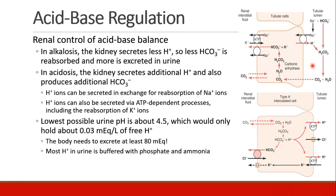The body can acidify the urine down to a pH of about 4.5. If you do the math, that's only about 0.03 milliequivalents per liter of free hydrogen ion — far less than the 80 milliequivalents we need to get rid of every day. So most of the hydrogen ion in your urine is buffered, either with phosphate or ammonia.